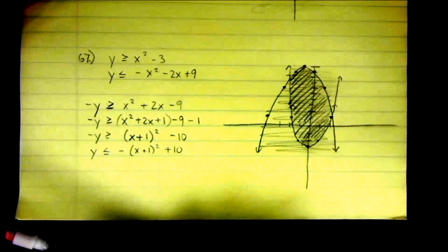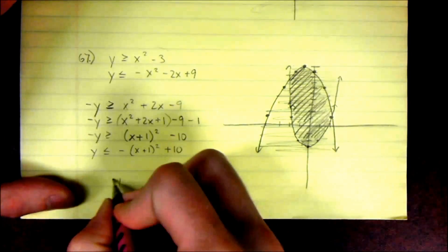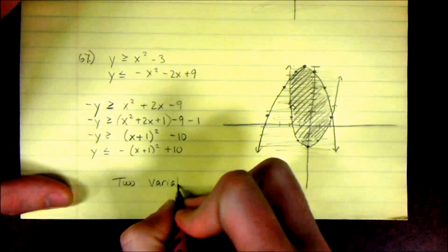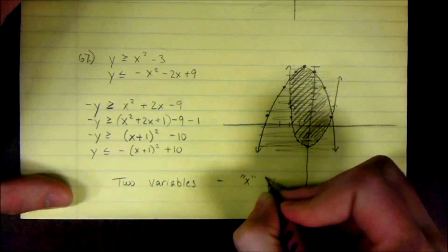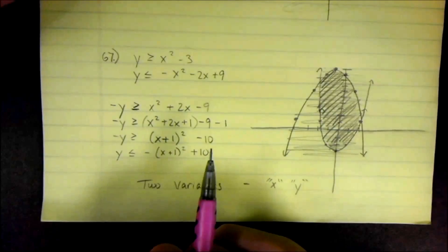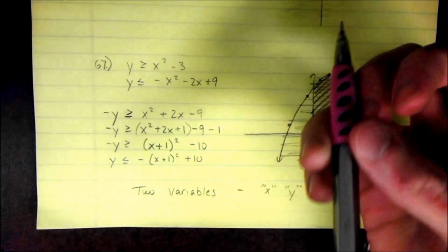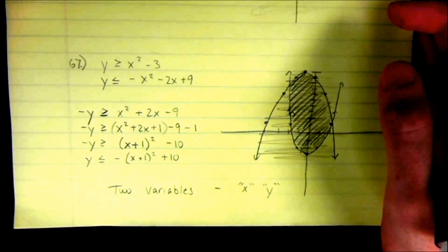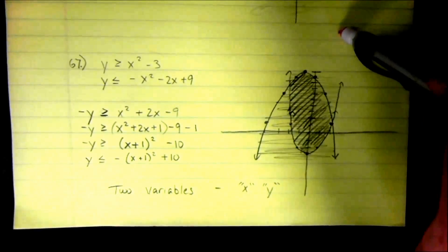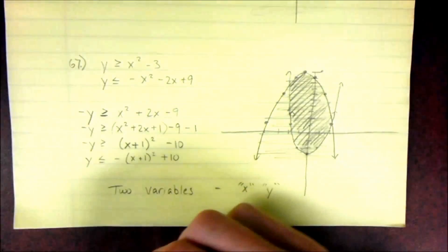All of these quadratic inequalities had two variables — an x and a y. There's also such a thing as a one-variable quadratic inequality, which I'll cover in another video. They're solved a little differently, and I'll show you the approach we use at my school. If you have any questions, leave a comment below — I'd be happy to help. Good luck!